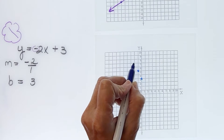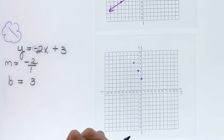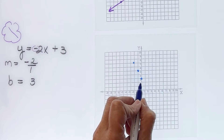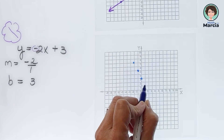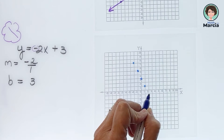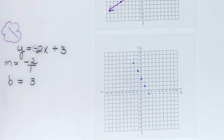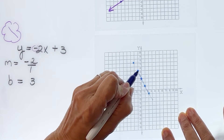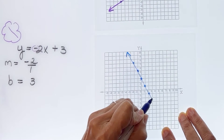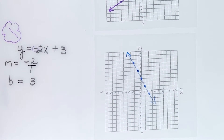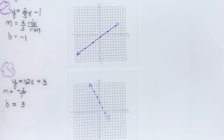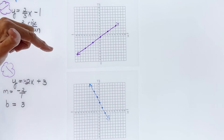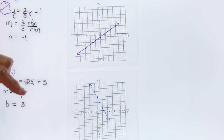To graph a few more points below, I go up 2 and over 1, then down 2 and over 1, and down 2 more and over 1. Now connecting my ordered pairs, I can see it is indeed a negative slope — going from left to right downhill — whereas a positive slope goes uphill from left to right.